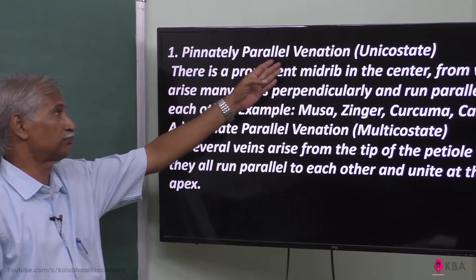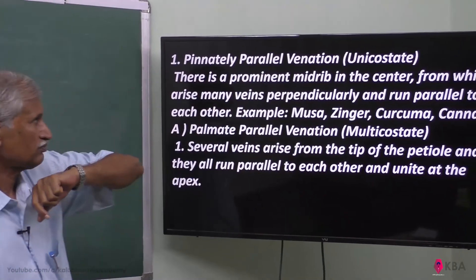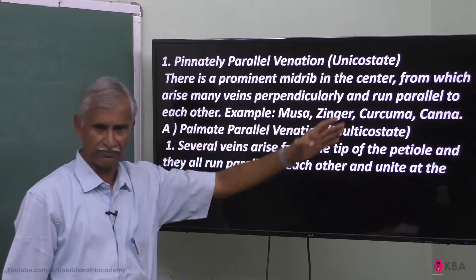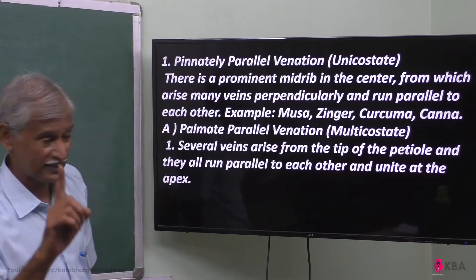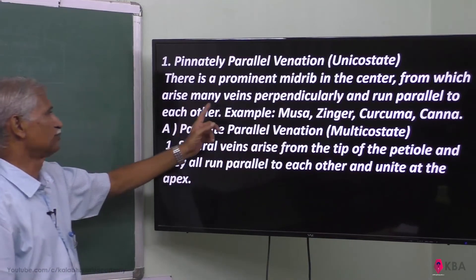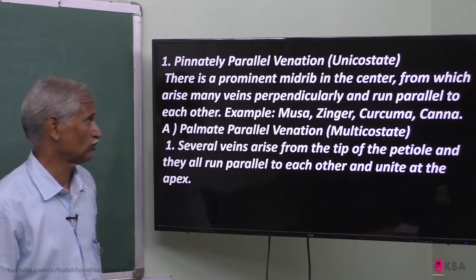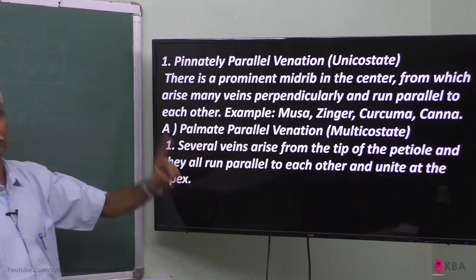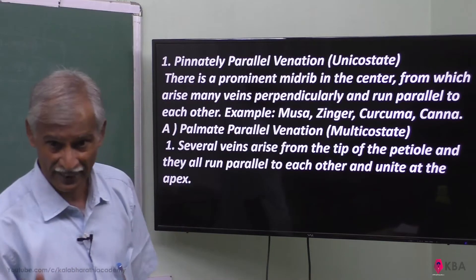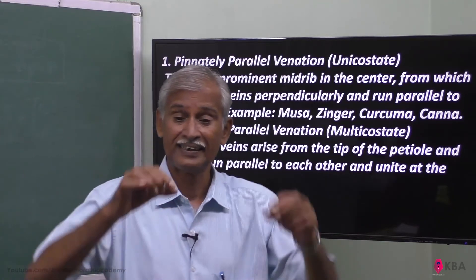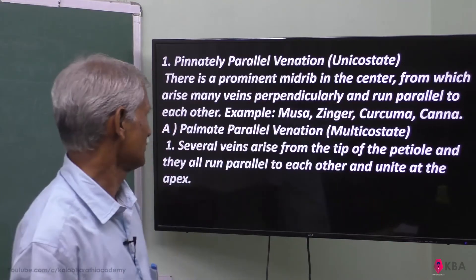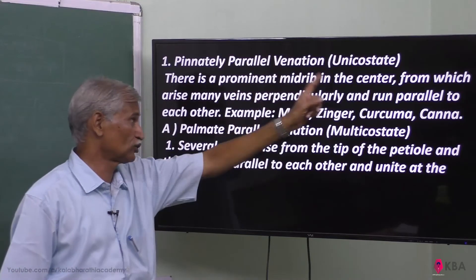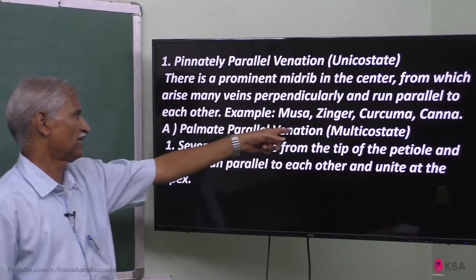Pinnately parallel venation: there is a prominent midrib in the center from which arise many veins that run perpendicularly and parallel to each other. This is called pinnately parallel venation. Examples are Musa and Ginger.